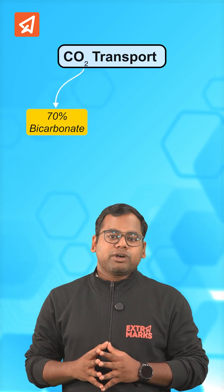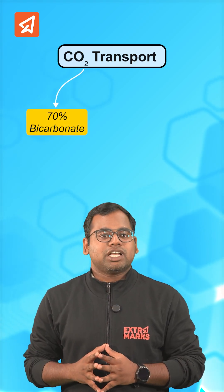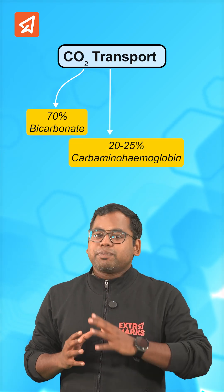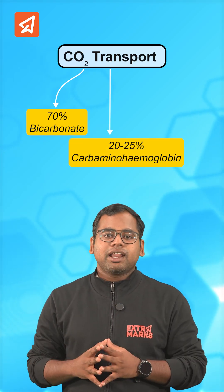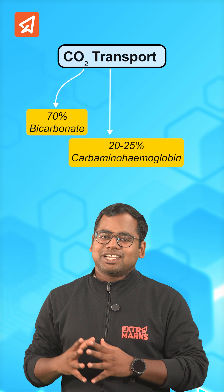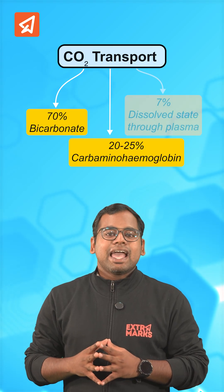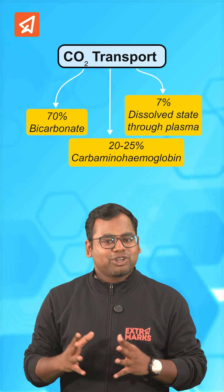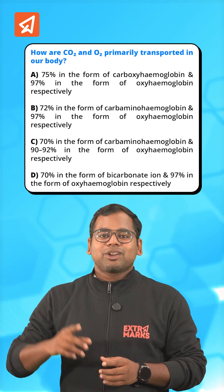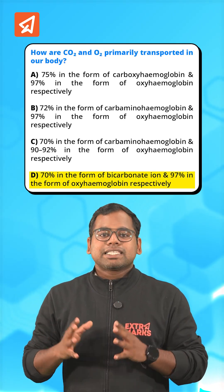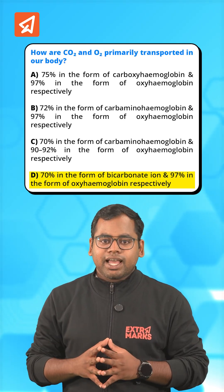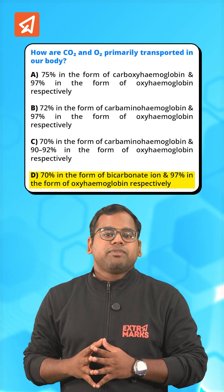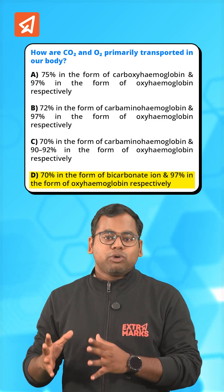Now let's talk about the transport of carbon dioxide. Maximum 70% of carbon dioxide is transported as bicarbonate ions. So the correct answer to the above question is option D: 70% in the form of bicarbonate ions and 97% in the form of oxyhemoglobin, respectively.